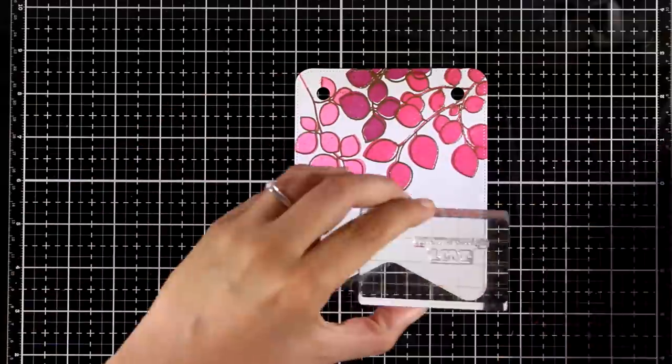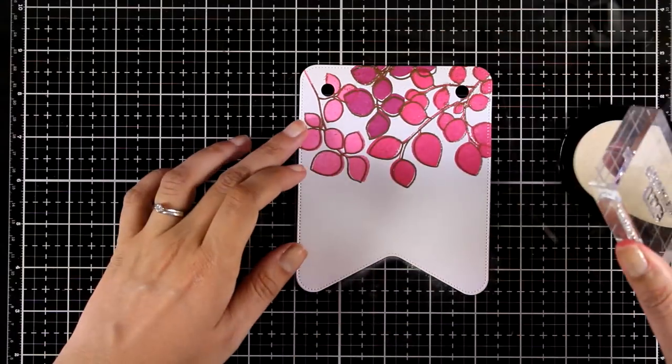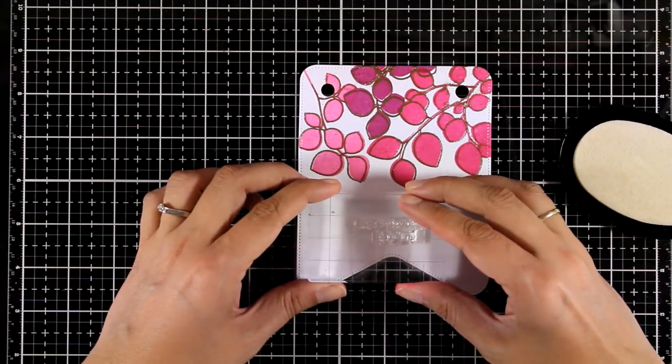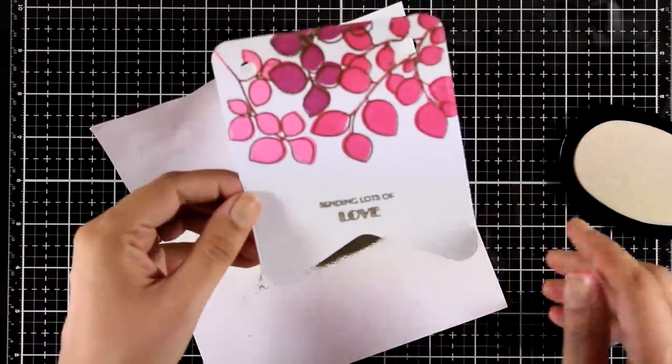In the same stamp set, there is a bunch of wonderful sentiments that you can use. I went with the one that says sending lots of love, which I am going to stamp again with my embossing ink and then I'm going to apply the same embossing powder.